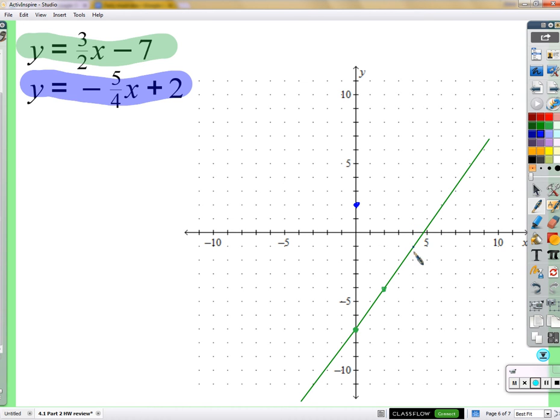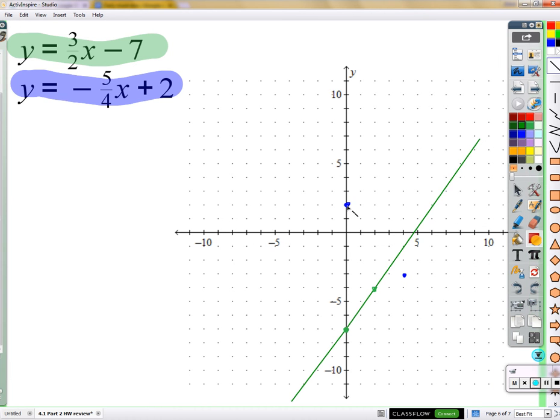Okay. Y-intercept of two. And a slope of negative five-fourths. So we're going to go over four and down. Let's see. Five. One, two, three, five. Five. Two. Four. Two. Four. Five. Four. Four.